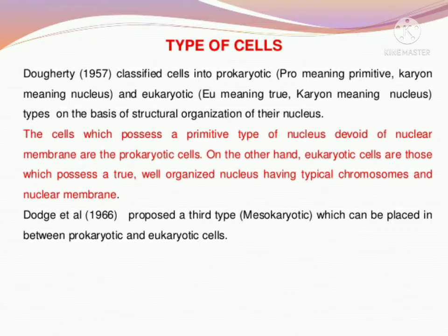As you know, cells are of two types. First are prokaryotic cells, second one are eukaryotic cells. Prokaryotic cells are those that evolved before the formation of the nucleus — meaning, the nucleus is absent in them. Those cells we call prokaryotic cells.